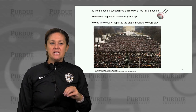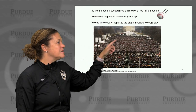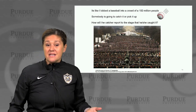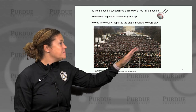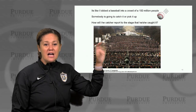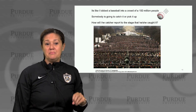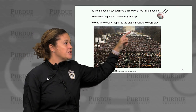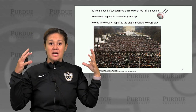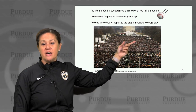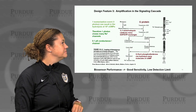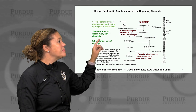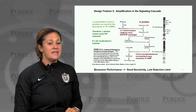It's a bit like lobbing a baseball into a crowd of 100 million people — somebody's going to catch it with all those people packed in. But the problem is how will the catcher report to the stage — like our brain — that he or she caught it? This brings us to design feature number three: amplification in the signaling cascade.